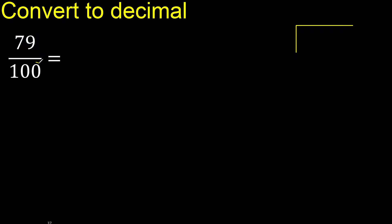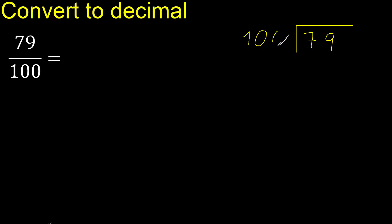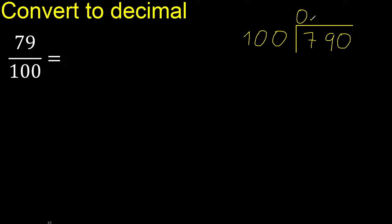79 divided by 100. 79 is less, therefore complete with 0. Here, 0 point.